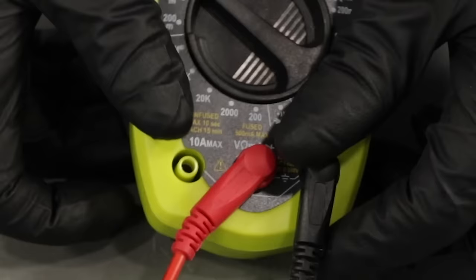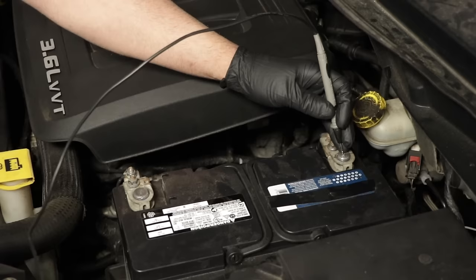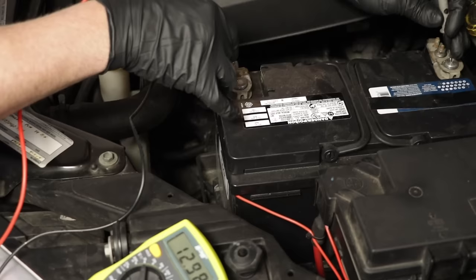Make sure those are in. We'll take our black lead, which is going to be our negative lead, put it on the negative battery terminal. Take the red lead, stick it on the positive, and we can check the voltage of the battery right now.